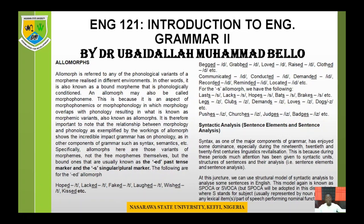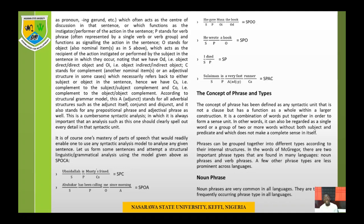The subject is the doer of an action. The predicate or verb is the action being performed by the subject. The object is the recipient or receiver of the action being performed. The complement is either of the subject or the object — a word referring you back to the subject or the object. The adjunct is either a prepositional phrase or adjectival phrase, amplifying the sentence depending on the choices of the writer or speaker.